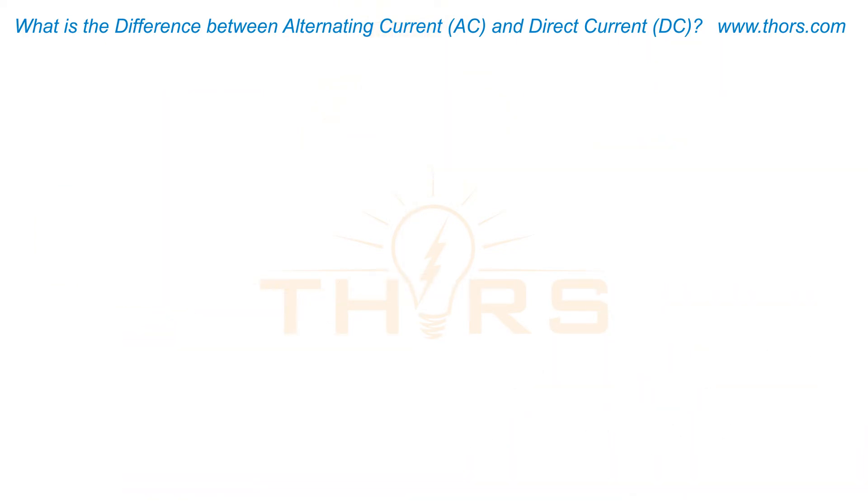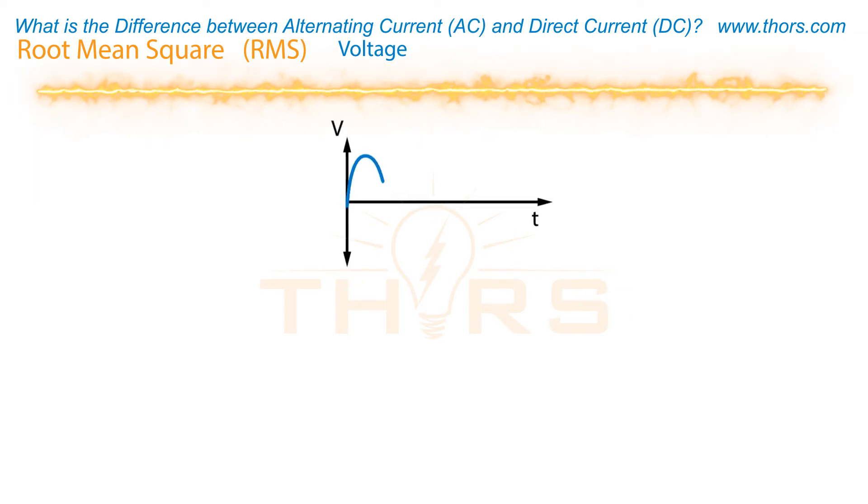In AC electrical circuits, the root mean square, or RMS, is used to represent the amount of voltage. This is essentially the average of the sine wave.